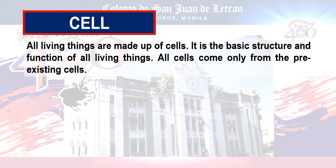We have three statements under cell theory. All living things are made up of cells. It is the basic structure and function of all living things. And lastly, all cells come only from pre-existing cells.